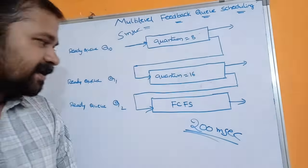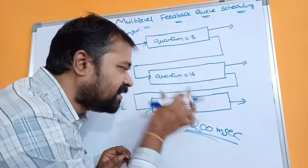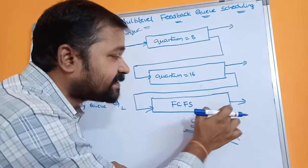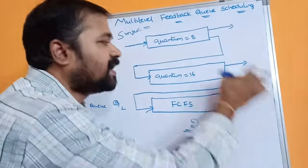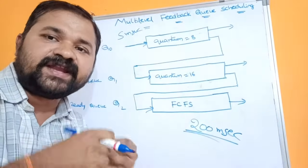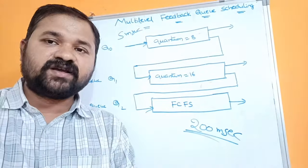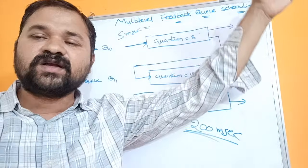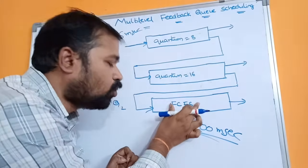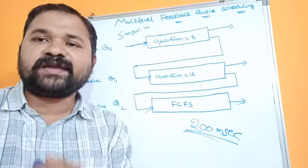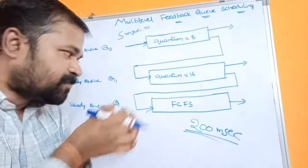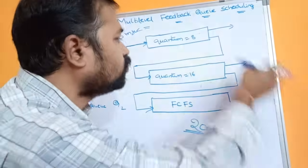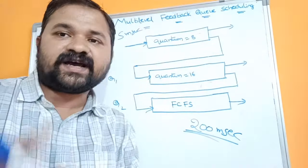One more important point: if a set of processes are waiting in a low priority queue for a long amount of time, those processes will be moved from the low priority queue to a higher priority queue. In this way we can overcome the starvation problem. Starvation means the CPU is executing only high priority processes for a long time, causing low priority processes to wait indefinitely. By moving a process from a low priority queue to a higher priority queue after a long wait, we can avoid starvation.